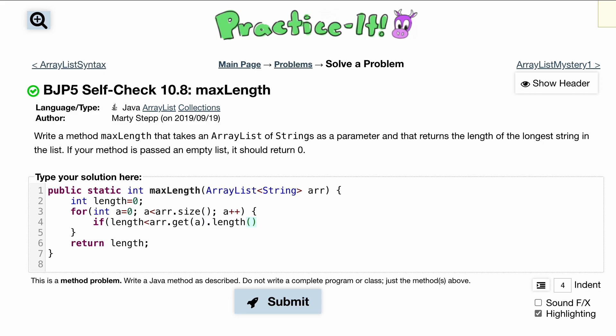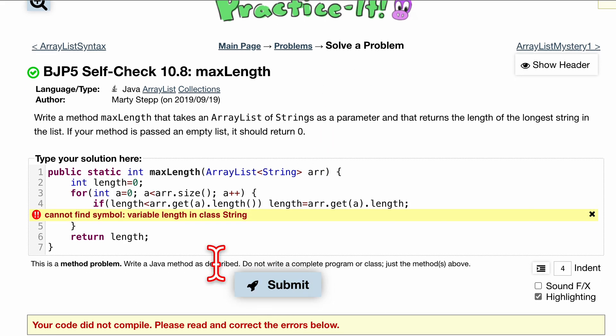and if this is true, we want to reassign length to be equal to our arr.get(a).length. So we get this length. That's pretty much it. So let's press submit, and we can't find the variable length in class string, so let's look at this.